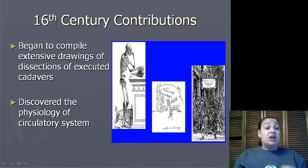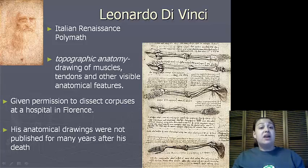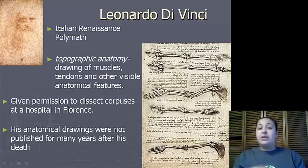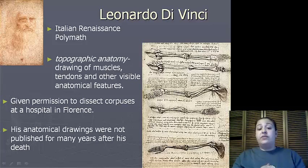We discovered the physiology of the circulatory system. Leonardo da Vinci was an Italian Renaissance polymath, meaning he studied many different things, such as art, painting, and anatomy. He combined these into the idea of topographic anatomy, which are drawings of the muscles, tendons, and other visible anatomical features. He was given permission, since he was such a great artist, to do specific dissections in a Florence hospital. Unfortunately, he died right before gathering all of his works, and his works were not published for many years after his death.